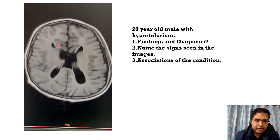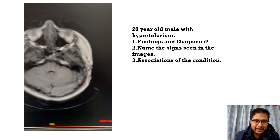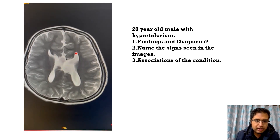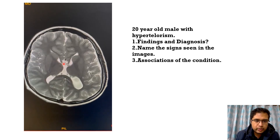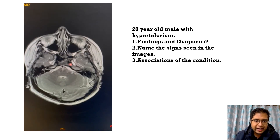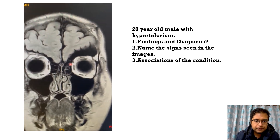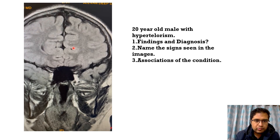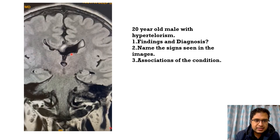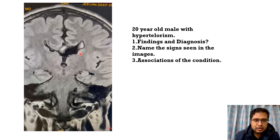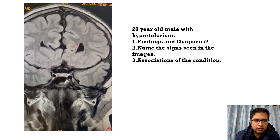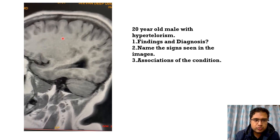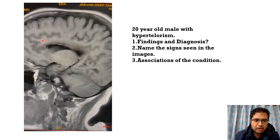These are axial T1-weighted images where we can see the parallelly oriented lateral ventricles. These are the axial T2-weighted images where again we can appreciate parallel orientation of the lateral ventricles with high-riding third ventricle. Here are the coronal FLAIR images, and we can see these elongated frontal horns of the ventricles. Here are the sagittal images where there is complete absence of corpus callosum.